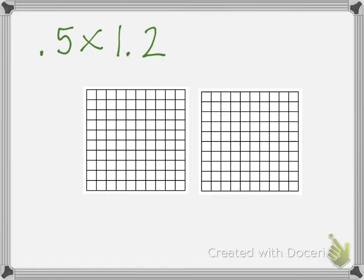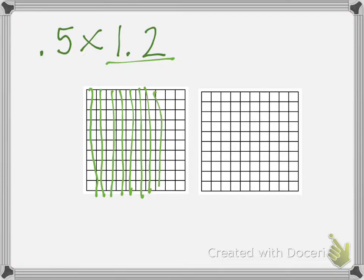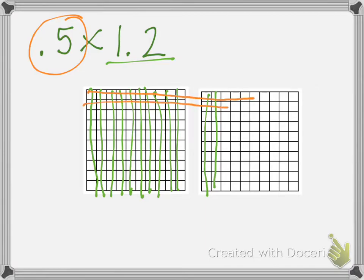If you want to pause it and try it on your own, you can. So we have 1 and 2 tenths. Let's do that first. Do your larger number first. So we're going to go all the way over 1. And then our 2 tenths. And then we want to show 5 tenths of the 1 and 2 tenths. So 5 tenths. And you can go all the way across, but it doesn't really matter because we really just want to see the ones that intersect. We want to see what is 5 tenths of this amount.